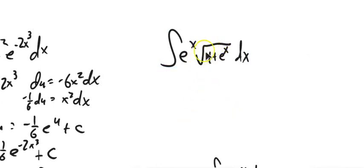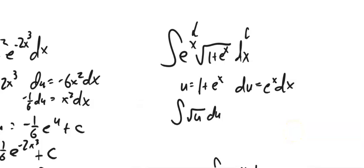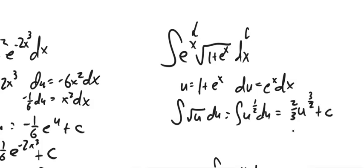I have 1 plus e to the x inside the square root, so I'm going to let my u be that. Sometimes you'll just try something and maybe it works, maybe it doesn't — then you just try a different thing for your u. The derivative of a constant is 0, and the derivative of e to the x is itself. So there I have those pieces. This would be the integral of square root of u du, which is u to the 1/2 power, so that gives 2/3 u to the 3/2. Then I plug back in and compensate. Plus my constant.